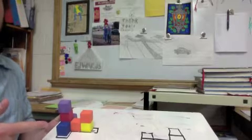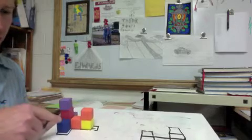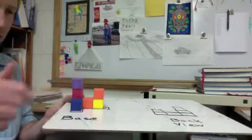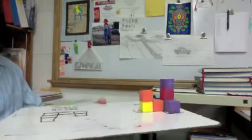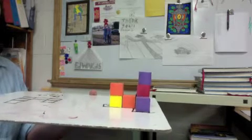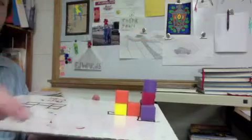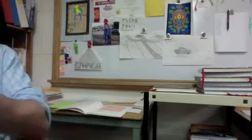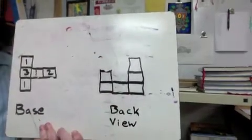Now for the back view. We had two here, one, one, three, and then the purple one in the back. The front view was three, one, two — now we reverse it for the back view by turning the building around. Looking straight on from the back, it's now two, one, three. That is what you're seeing straight on from the back.